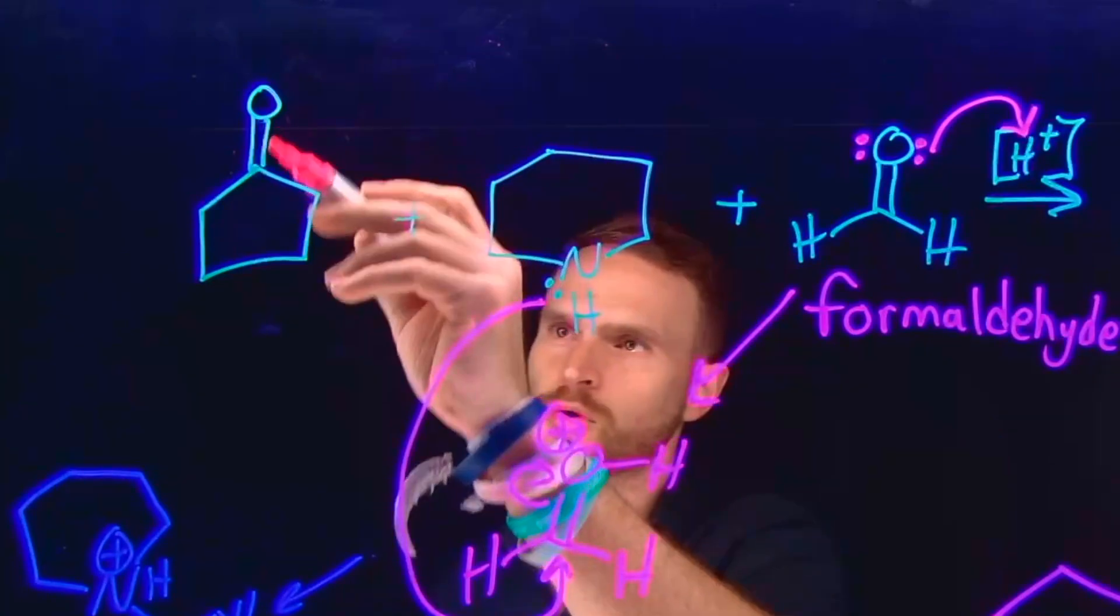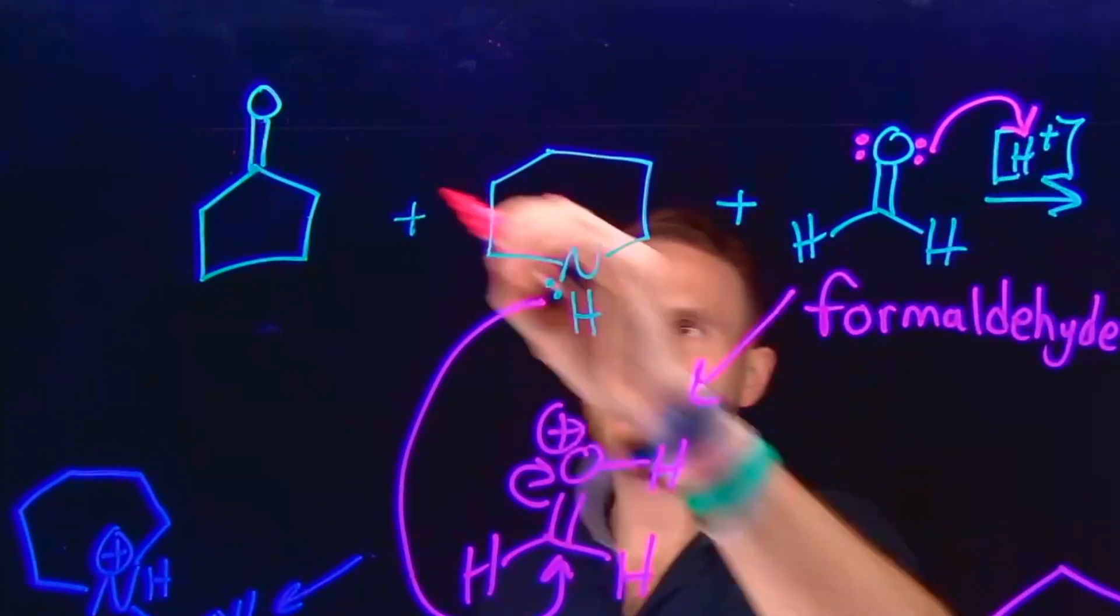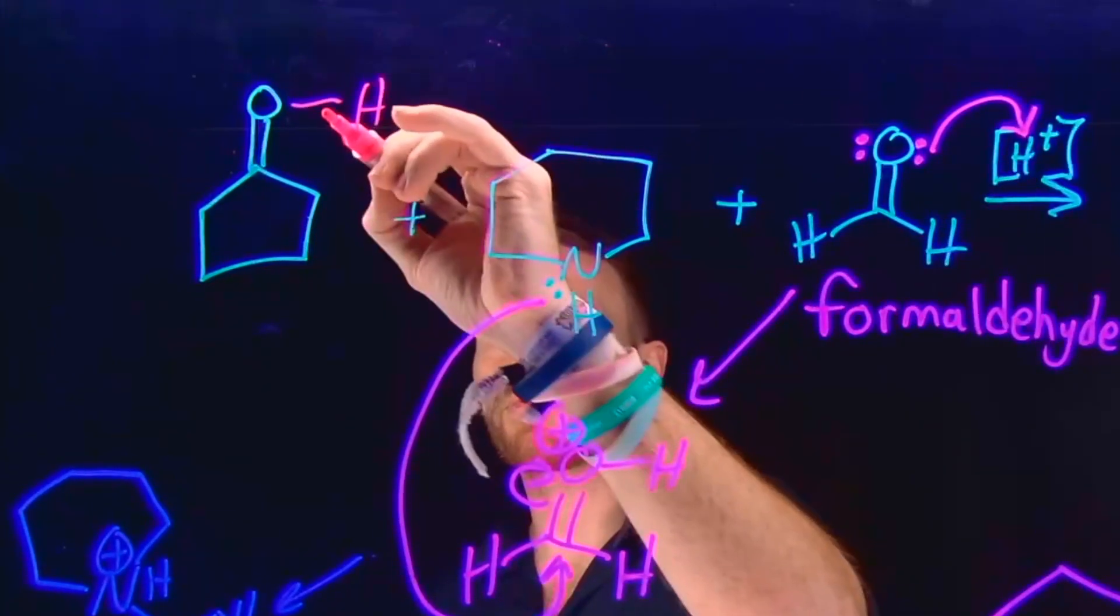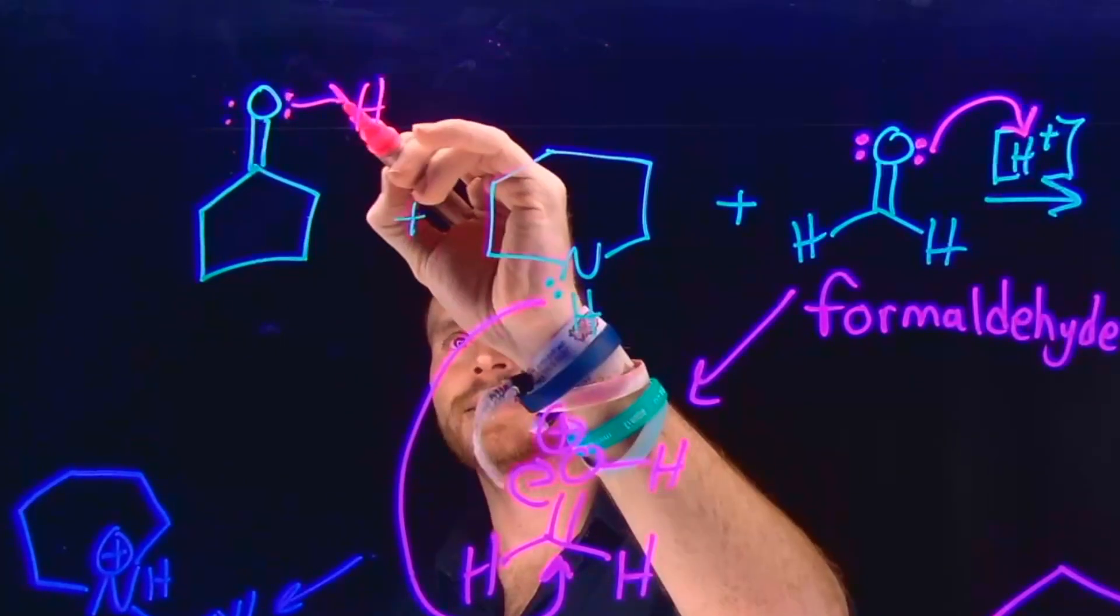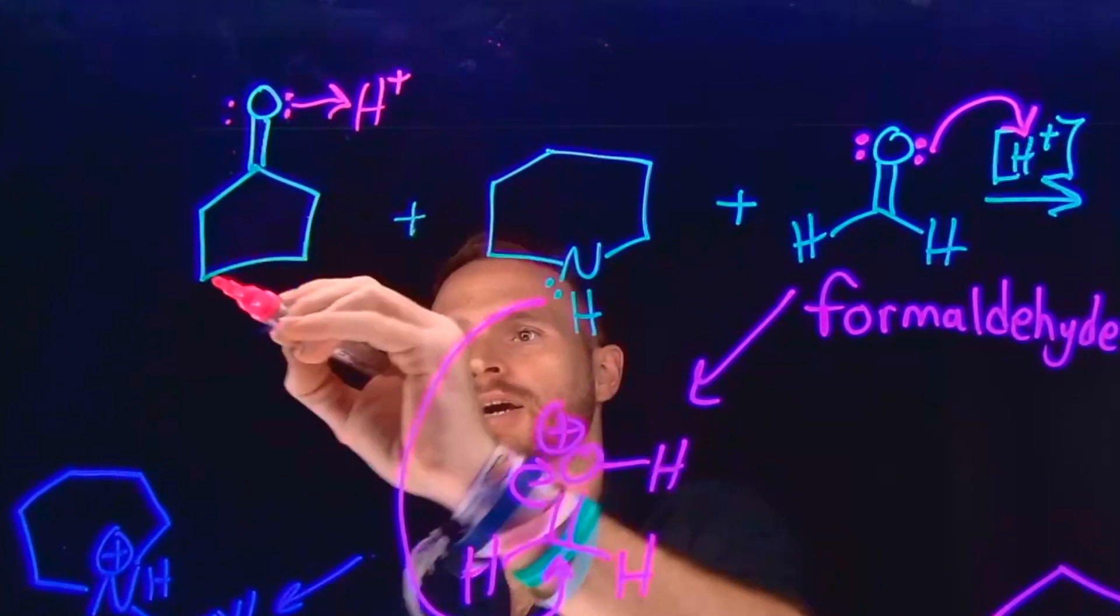Now, importantly, just like before, where we had this ketone, we have an acid that can come and be protonated. So if this carbonyl oxygen attacks an acid and becomes protonated, this will generate a new turbocharged carbonyl species because this is positively charged.